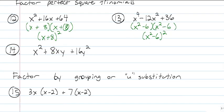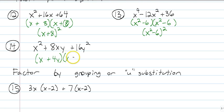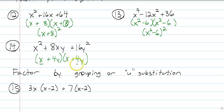And finally for perfect square trinomials, we look at this one. Same thing — we could take the square root of the first term: x. Plus, we could take the square root of the second term: that's 4y. Then we double check when we multiply it out: we get x squared, sixteen y squared, and the middle term becomes 4xy plus 4xy, which gives us 8xy. So that means the perfect square trinomial here would be x plus 4y, quantity squared. Always look for that.